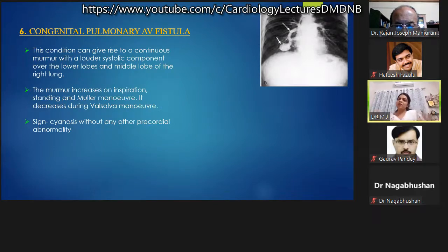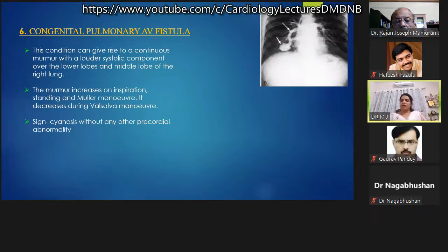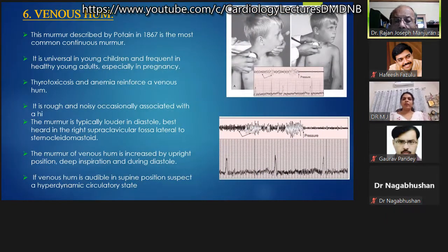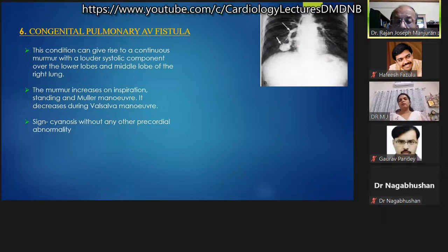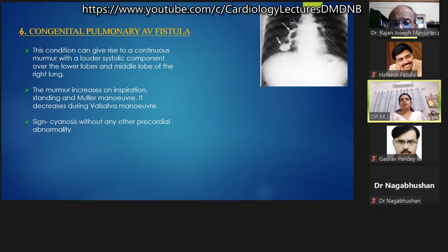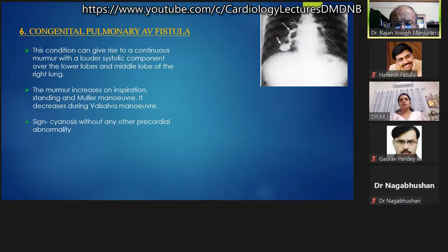When suspecting pulmonary arteriovenous fistula, screening can be done: asking the patient to perform Müller's procedure will increase the fistula in size and increase the murmur; Valsalva maneuver will shrink the fistula in size and decrease the murmur. This allows clinical diagnosis of the shadow or lesion of pulmonary arteriovenous fistula through dynamic auscultation.